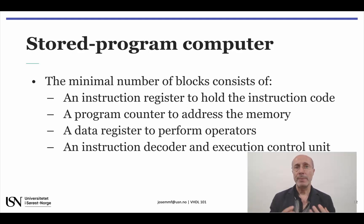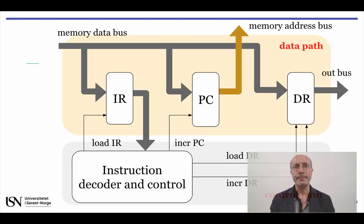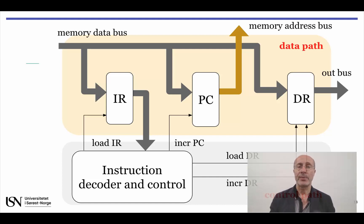This is also a minimal CPU architecture, because if you remove any one of the blocks, it won't work anymore. If you put them together, as shown in this slide, you again have a perfect match to the general block diagram representing an FSMD. The instruction decoder and execution control unit is in fact a finite state machine that works as the control path, and the remaining blocks make up the data path.